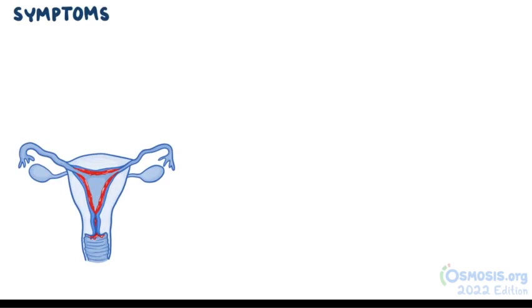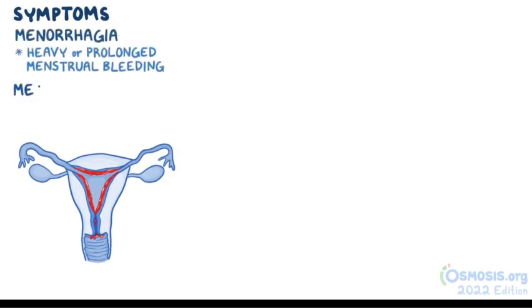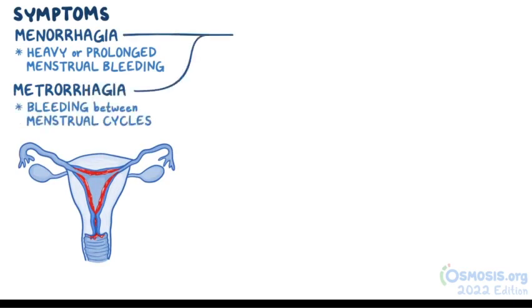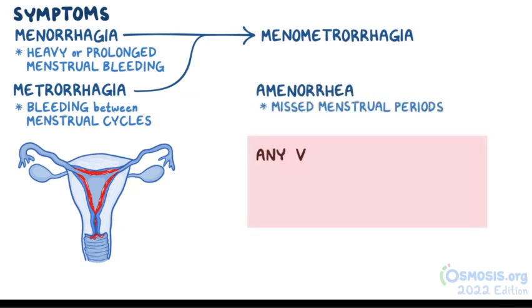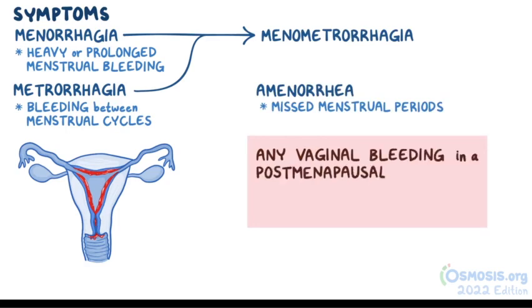The most common symptoms include menorrhagia — heavy or prolonged menstrual bleeding — metrorrhagia — bleeding between menstrual cycles — or a combination of both, known as menometrorrhagia. In some cases there could also be amenorrhea, meaning missed menstrual periods. Any vaginal bleeding in a postmenopausal female could be a sign of endometrial hyperplasia.